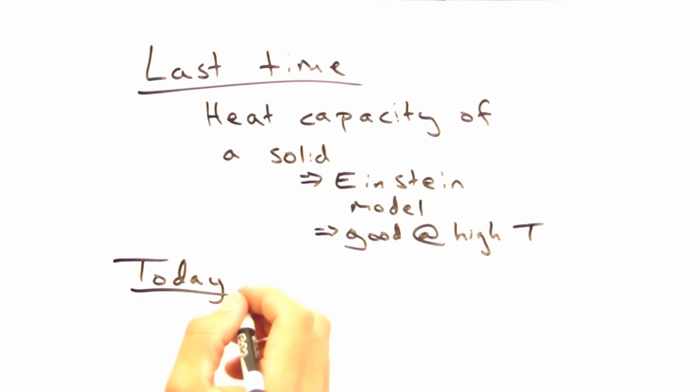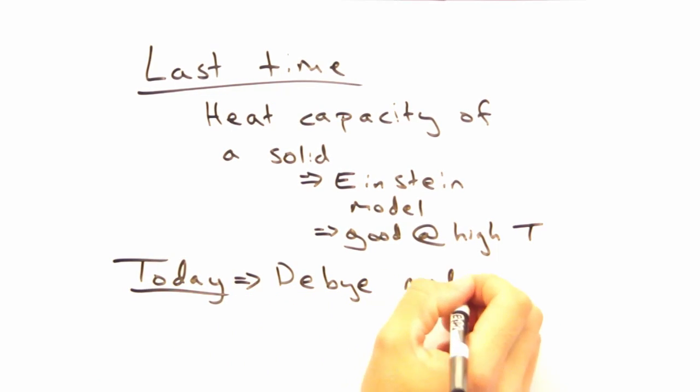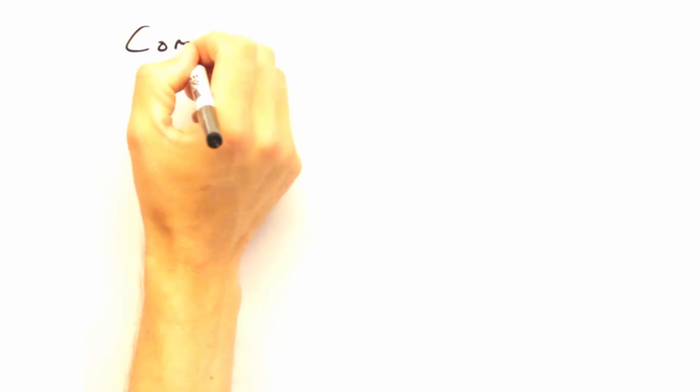So with that in mind, our goal today will be to step it up one notch and use the Debye model for heat capacity. How's that different from the Einstein model?